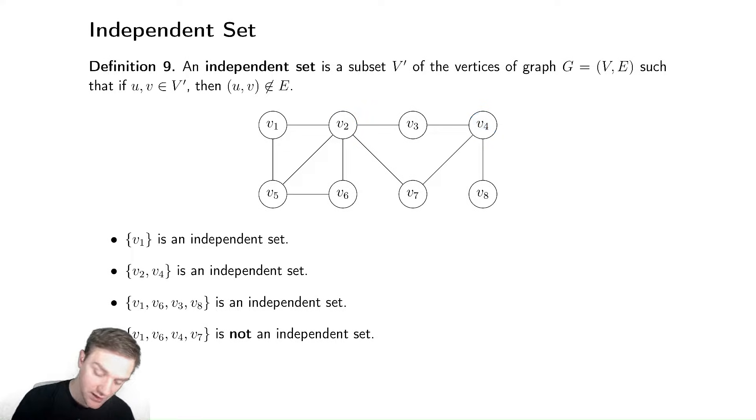Can we find a bigger one? Let's look at V1, V6, V3, V8. We need to check: Is V1 connected to V3? No. Is V1 connected to V6? No. Is V6 connected to V3? No. Is V6 connected to V8? No. Is V1 connected to V8? No. Is V3 connected to any of them? No. Is V8 connected to any of them? No. So it's an independent set.